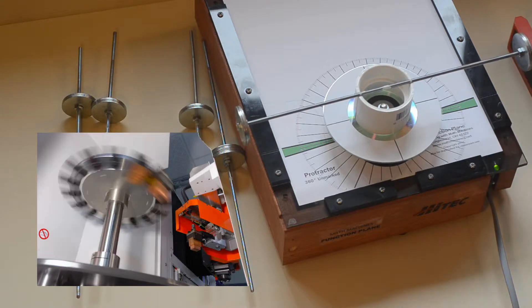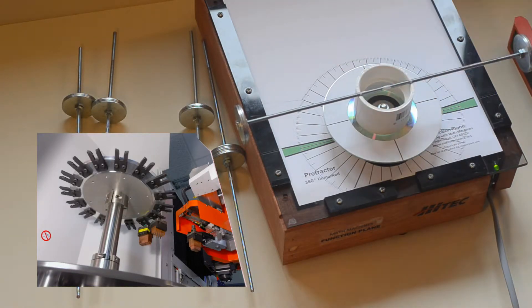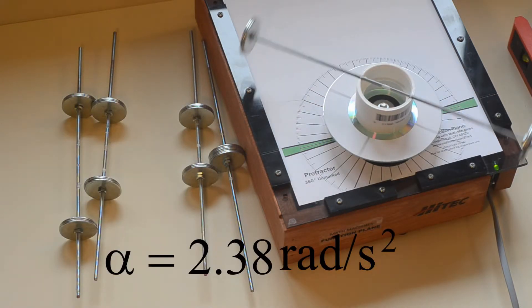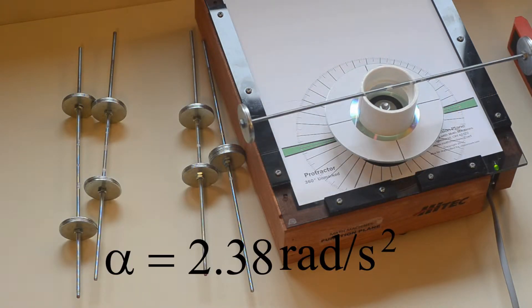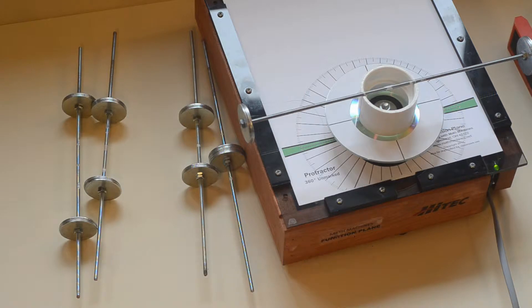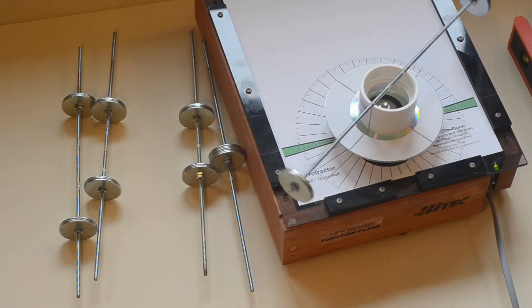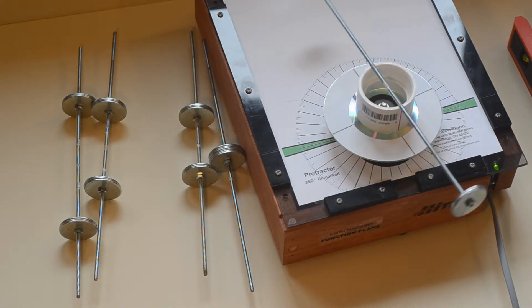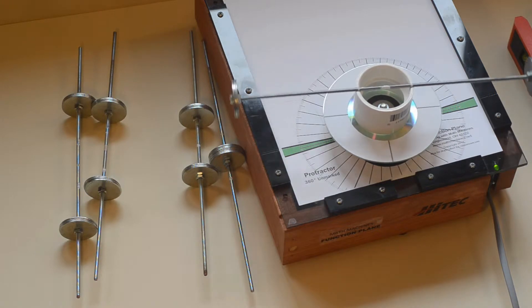Automated machines must often be designed or configured to reposition objects. If the operation is too slow, costs rise. If too fast, things break. Our task is to design and test a system that will rotate any one of five objects by 180 degrees as quickly as possible without breaking anything.